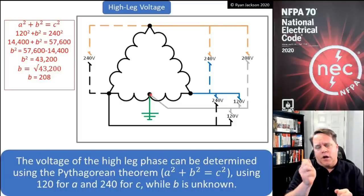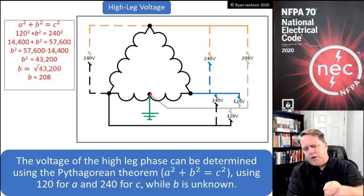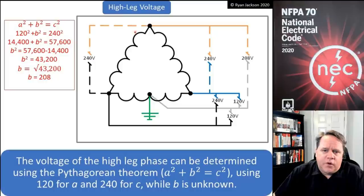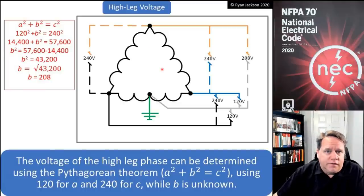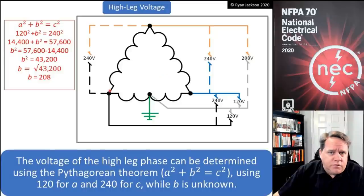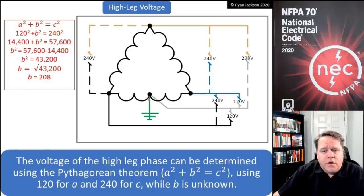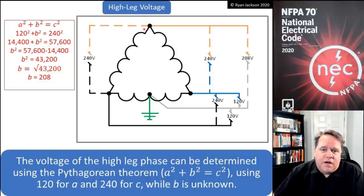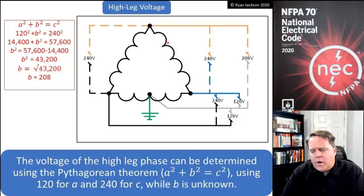If I take my meter and connect it to the neutral and read voltage to one line I'm going to get 120; I'm also going to get 120 to a different line. But what voltage would I get from the opposite point up at the top? That point is what we call the high leg, and the reason we call it the high leg is because you're going to get 208 volts. We figure this out using the Pythagorean theorem — a² + b² = c². We use 120 volts for A, we're solving for B, and we use 240 volts for C (the hypotenuse), and the math yields 208 volts to the high leg phase.